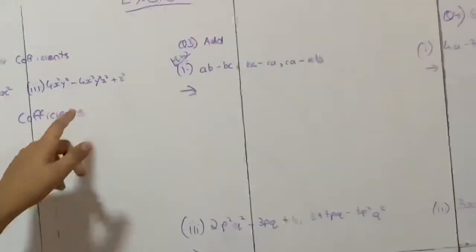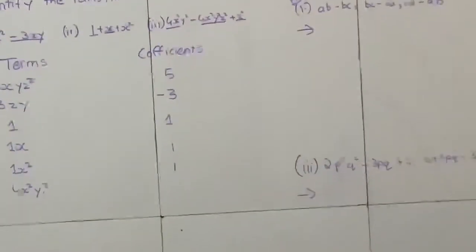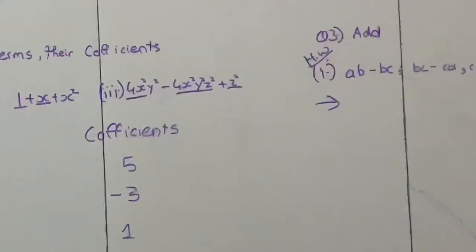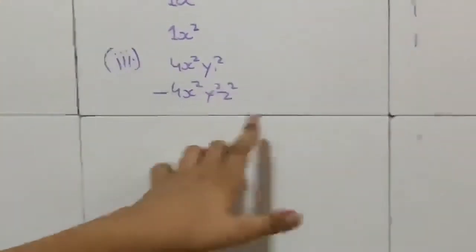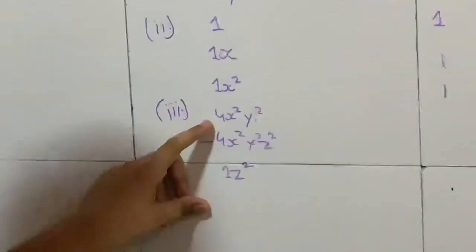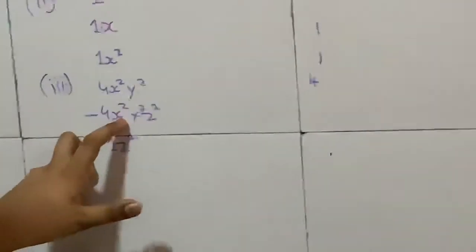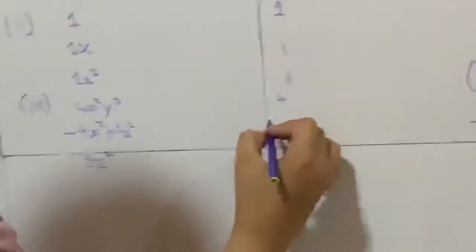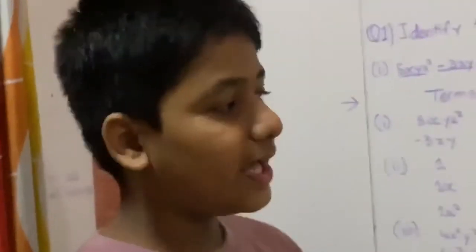In the third question there are three terms. The first term is 4x²y², the next is minus 4x²y²z², and the last is z², which you can write as 1z². Now the coefficient of 4x²y² is 4. For minus 4x²y²z², remove all the variables and you remain with minus 4. For z², you get 1. This was our first question, which was very easy. Now let us proceed to question number three.